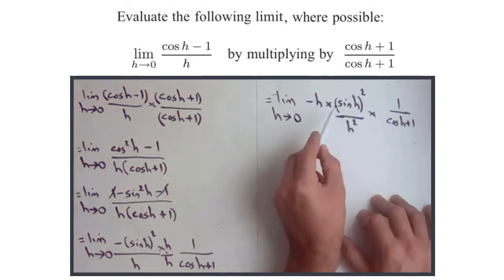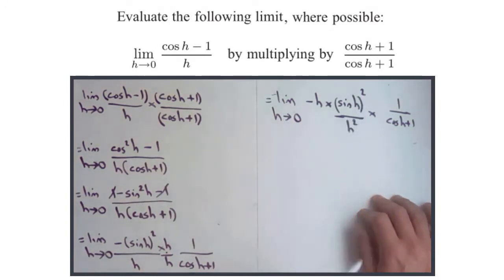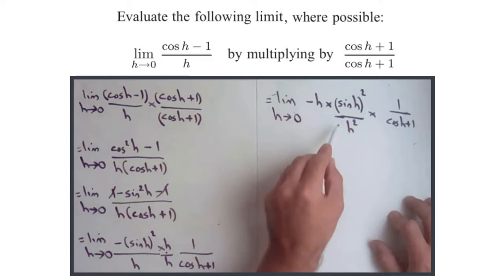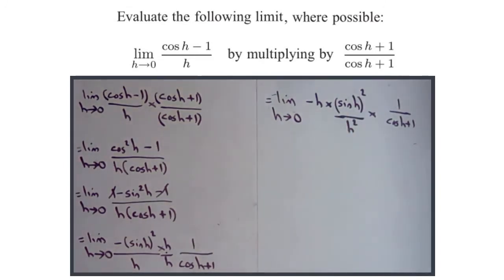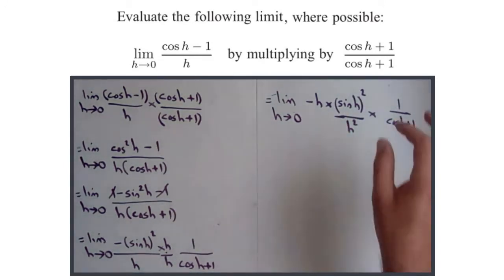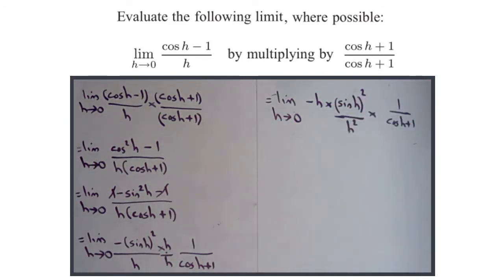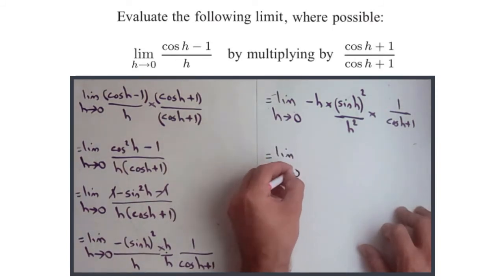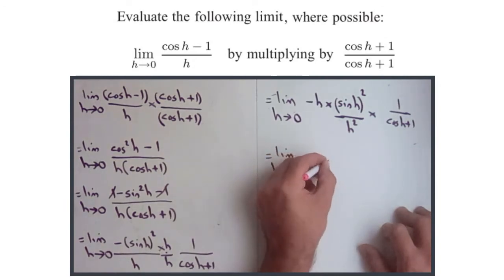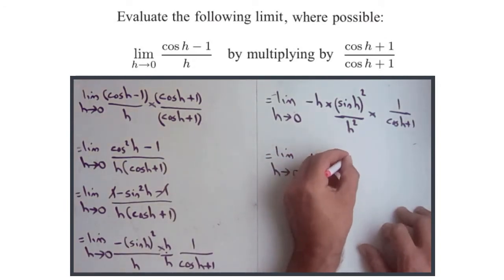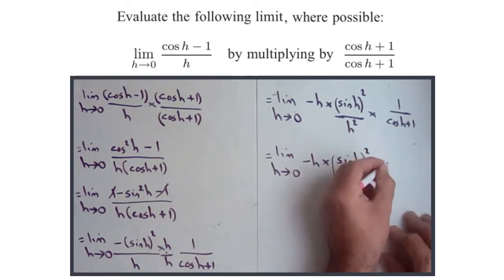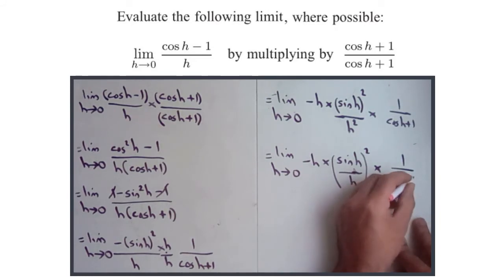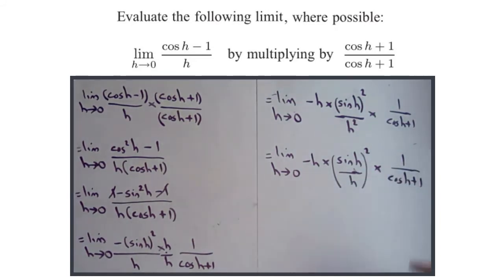Right, so now if you look, if you zero in on this middle bit, the sine h squared over h squared, we could rewrite that as sine h over h, all squared. So this equals the limit as h approaches 0 of minus h times sine h over h all squared times 1 over cos h plus 1.